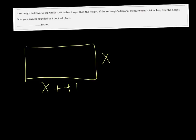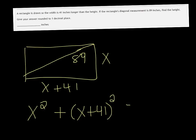If its diagonal measures 89 inches, so 89 for the diagonal, find the height, and give your answer rounded to one decimal place. Alright, so what we get here is the Pythagorean Theorem that says that the one side of the triangle squared plus the other side squared is equal to the diagonal squared. And this is only for a right triangle, which is what we have.